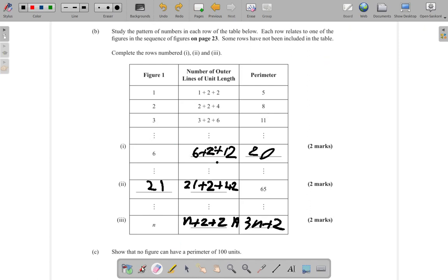What I will do here is make a perimeter of 100 equal to 3n plus 2. Remember that n must be a whole number. There will be no fraction, no decimal, or anything. N cannot be a fraction.